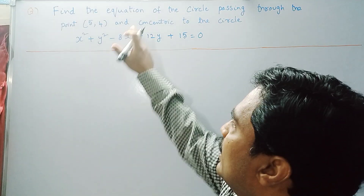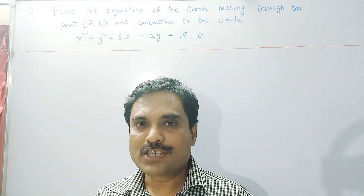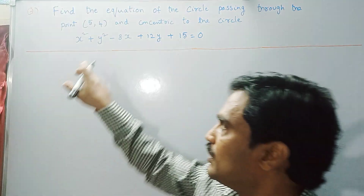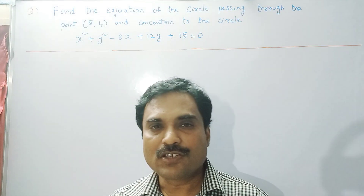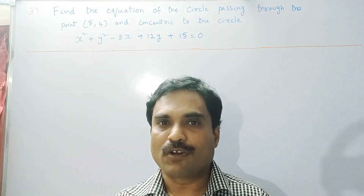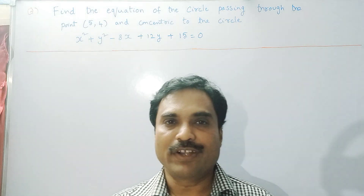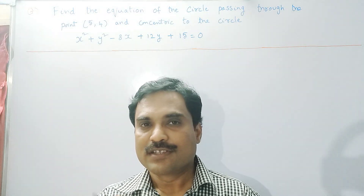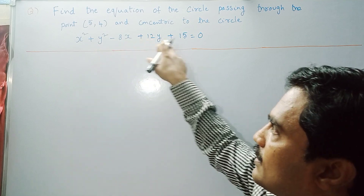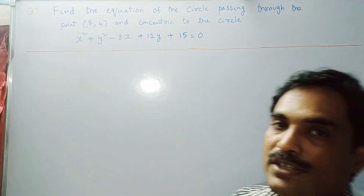What is our motive? We need to find the equation of a circle. The condition given is that the required equation of circle is concentric to the given circle. As you know, any circle concentric to some circle means that circle has the same center but a different radius. Since it has a different radius, the equation looks the same but the constant term differs.